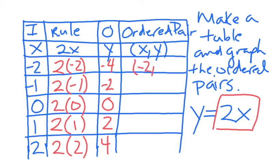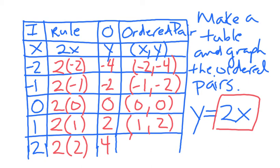negative 2, negative 4. Our x value and our y value. Parentheses, negative 1, negative 2. Parentheses, 0, 0. Parentheses, 1, 2. Parentheses, 2, 4.